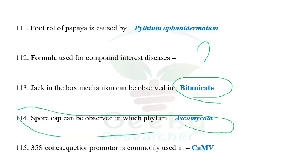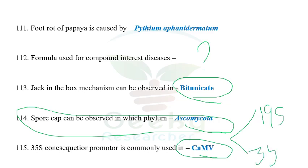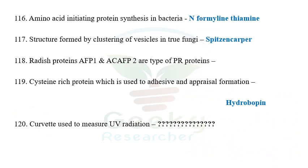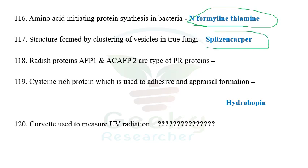The next question: 35S promoter — there are two types of promoters seen in Cauliflower mosaic virus: 19S and 35S. Among these, the most widely used promoter is the 35S type. The next question: the amino acid initiating protein synthesis in bacteria — N-formyl methionine initiates protein synthesis in bacteria, according to one of my friends. The next question: the structure formed by clustering of vesicles in true fungi is the Woronin body (Spitzenkörper).